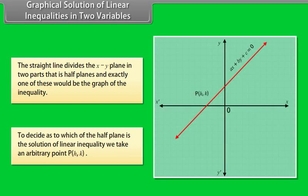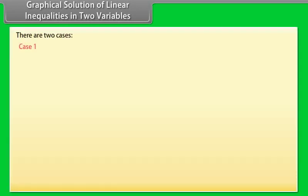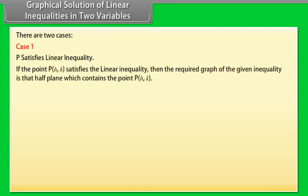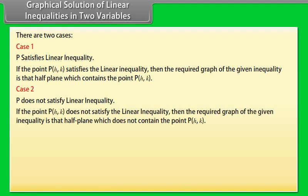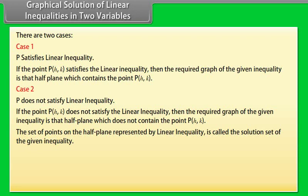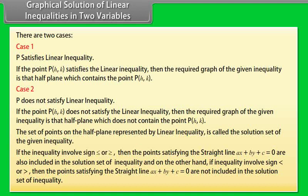To decide which half plane is the solution of the linear inequality, we take an arbitrary point P(h, k). Case 1: If P(h, k) satisfies the linear inequality, then the required graph is the half plane containing P(h, k). Case 2: If P(h, k) does not satisfy the linear inequality, then the required graph is the half plane not containing P(h, k). The set of points on the half plane represented by the linear inequality is called the solution set. If the inequality involves ≤ or ≥, then the points satisfying Ax + By + C = 0 are also included in the solution set.